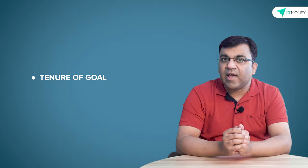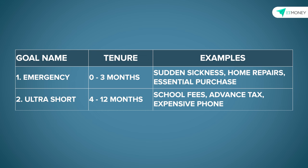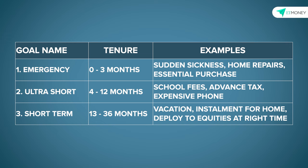All short-term goals can be categorized into two parameters: the tenure of the goal and also the importance of the goal. A goal's tenure can be segmented as an emergency goal which is one week to three months, an ultra short-term goal which has a tenure of four to 12 months, and then short goals which extend from the 13th month to the 36th month. So in planning for short-term goals, listing your goals and bracketing them as emergency, ultra short and short term becomes your first step.